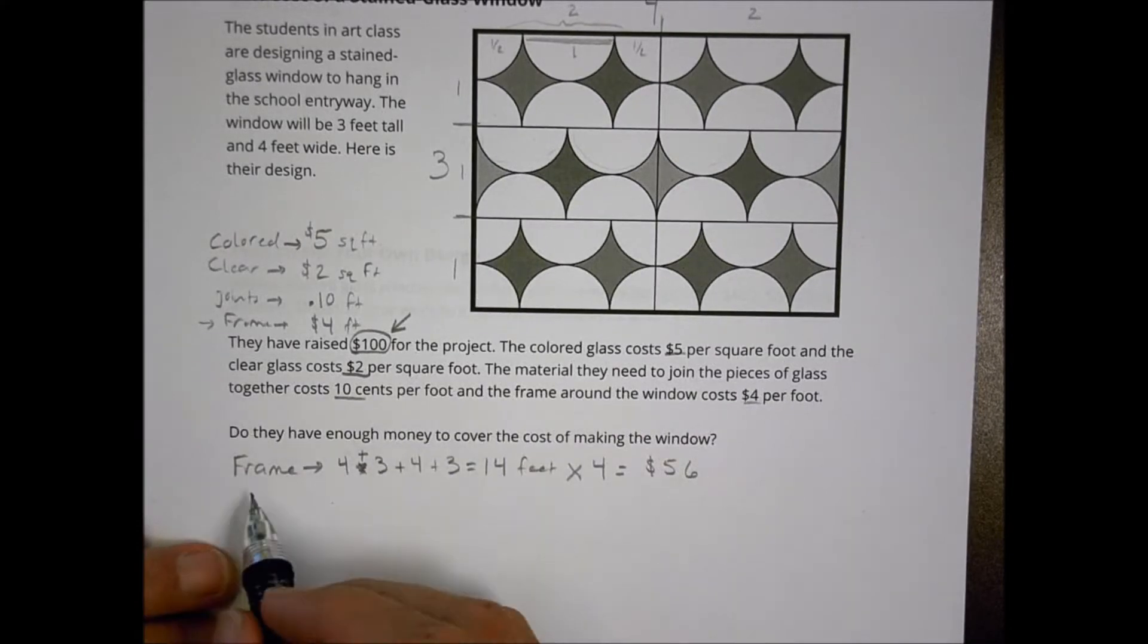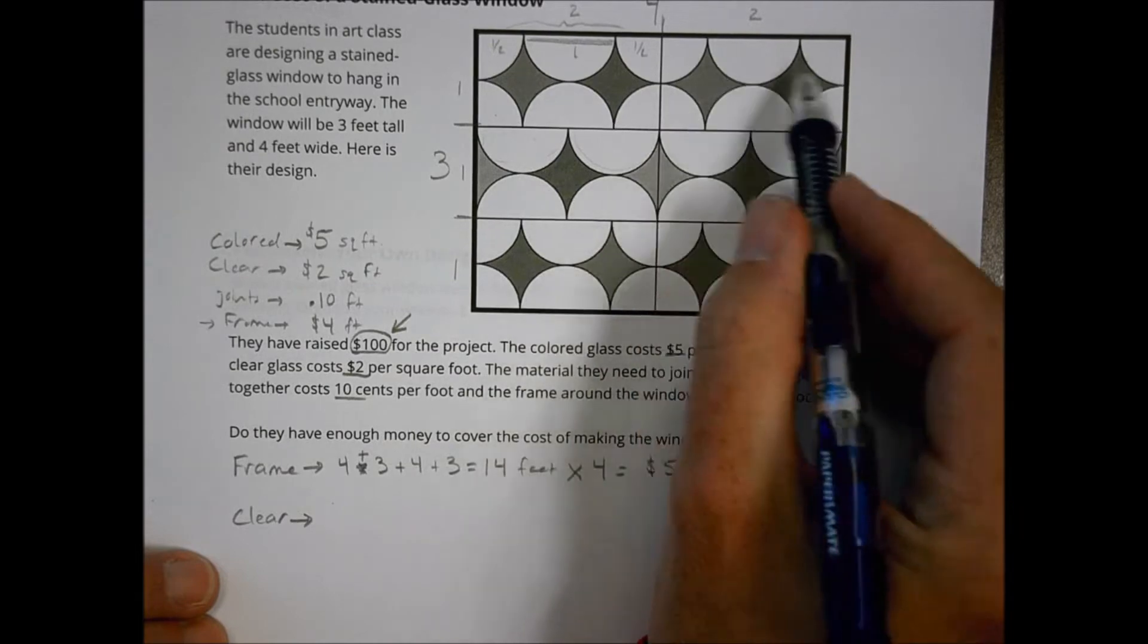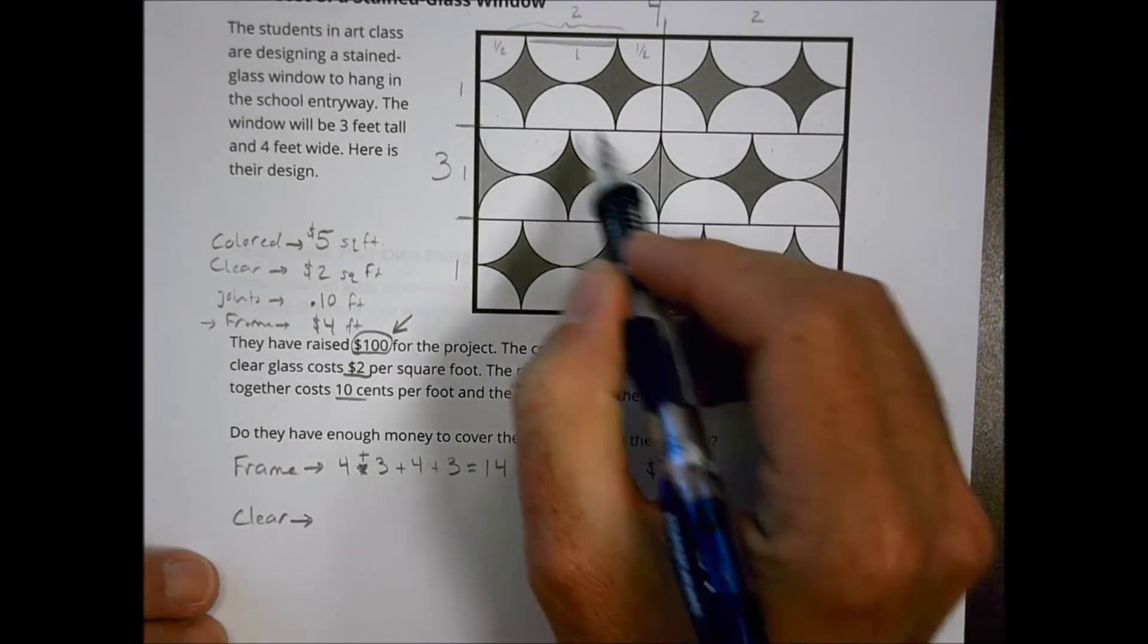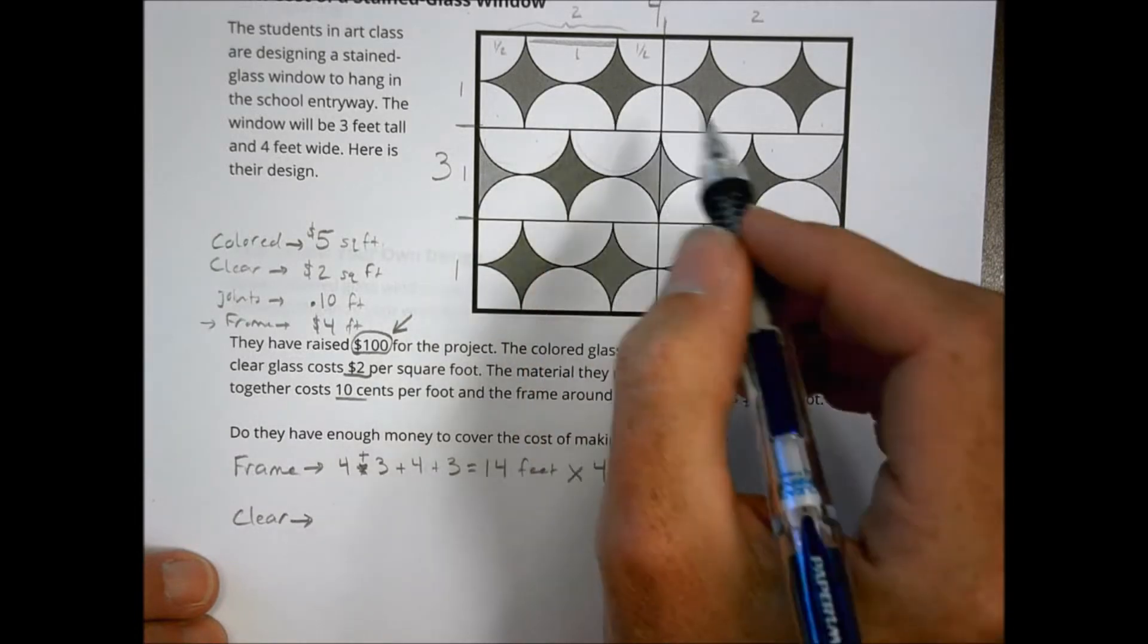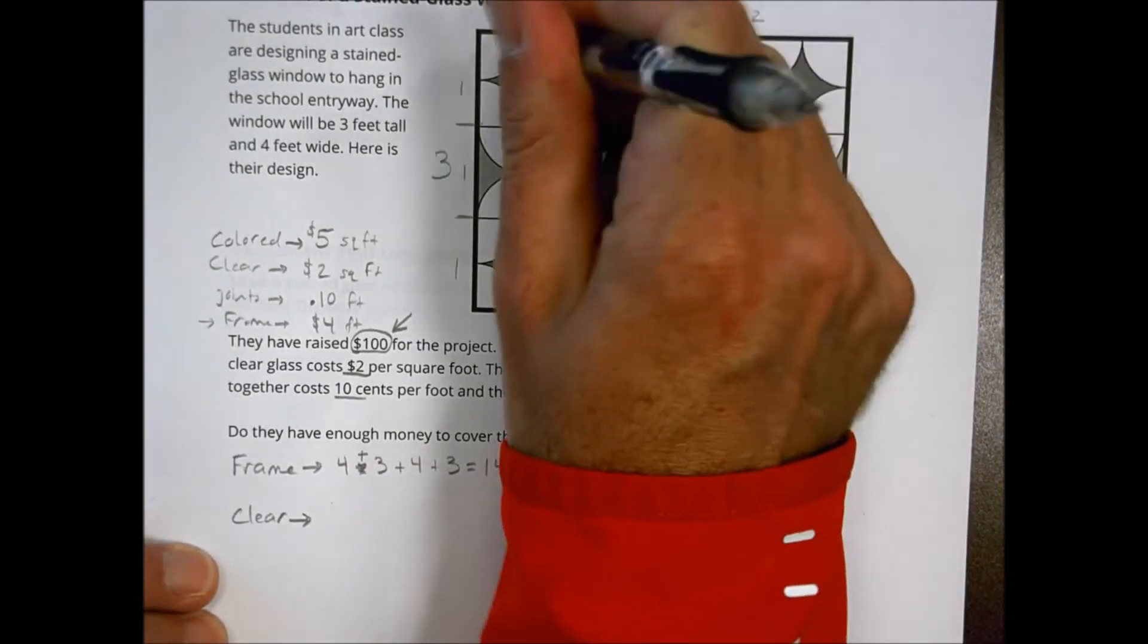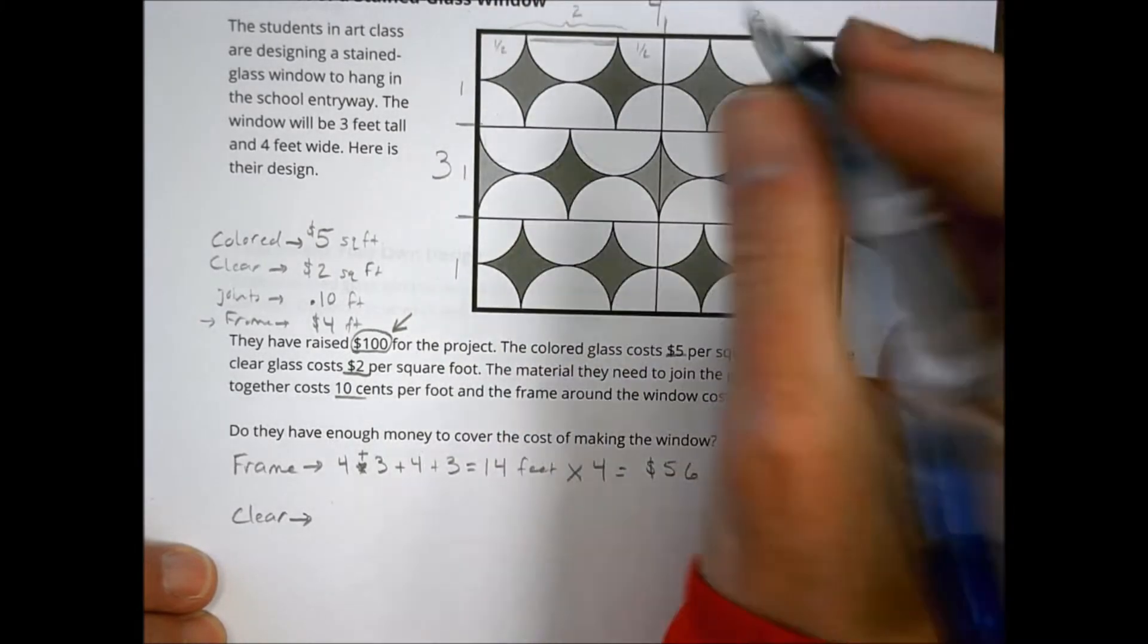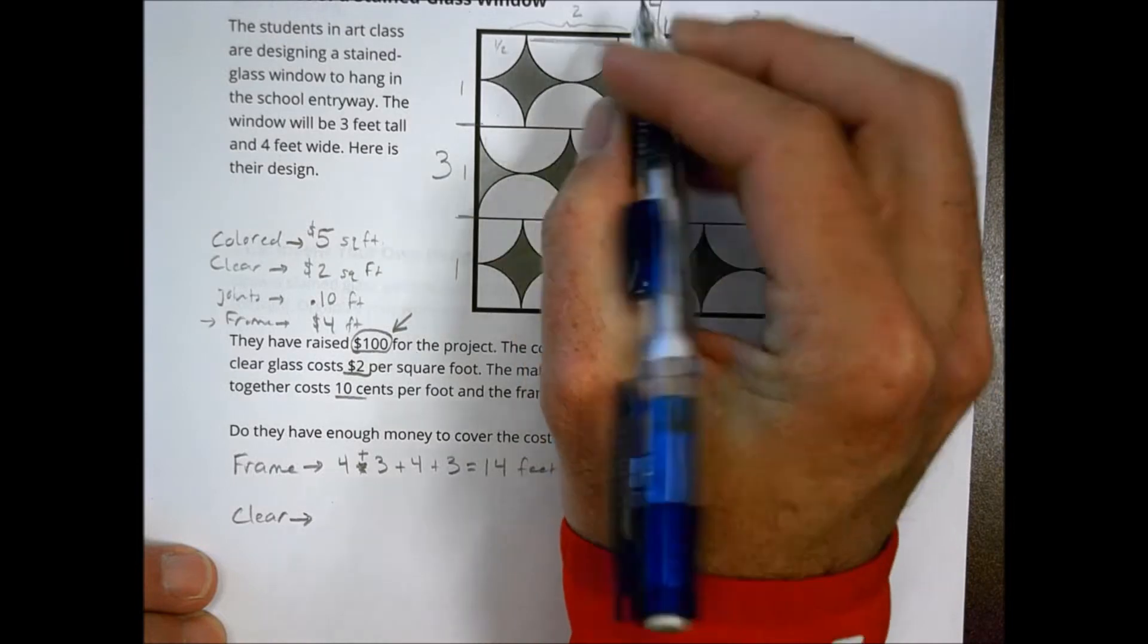Okay. So the next thing I want to look at here is let's take a look at the white or the clear. The clear pieces of glass. Okay. The clear pieces of glass are comprised of all of these semi-circles throughout this piece right here. If we take a look at the semi-circles, we can start to add them up and see how many we actually have because these are going to be an area thing. So let's add them up like this. I'm going to just do my halves.